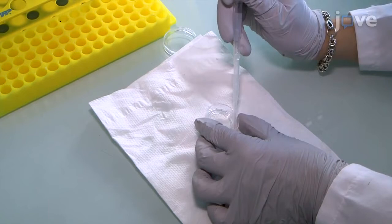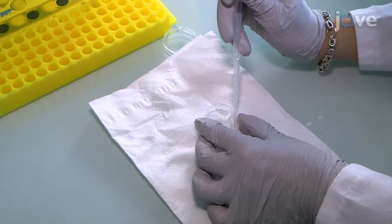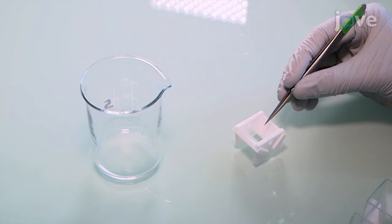To prepare the cover slips for flattening the gel, put them into a ceramic cover slip holder, put the holder in a small beaker, and pour siliconizing reagent over the cover slips, making sure to cover them completely.